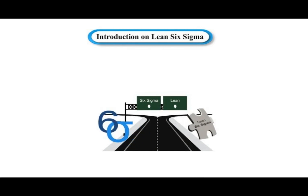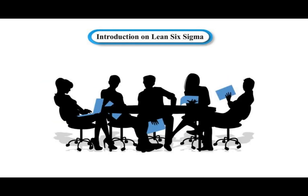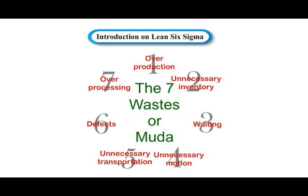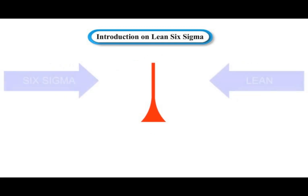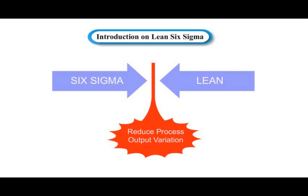Introduction on Lean Six Sigma: Lean Six Sigma is a synergized managerial concept of Lean and Six Sigma that results in the elimination of the seven kinds of waste or Muda. The objective of Lean Six Sigma quality is to reduce process output variations. Now have a look at the e-lecture describing Lean Six Sigma for your better understanding.